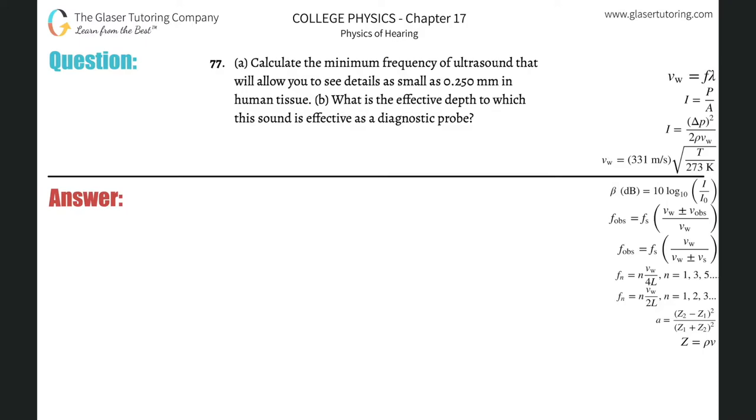Number 77 letter a: calculate the minimum frequency of ultrasound that will allow you to see details as small as 0.25 millimeters in human tissue. Basically, the precision in which we can identify human tissue, the distance, is equivalent to the wavelength of the ultrasound wave. So the wavelength here is going to be 0.250 millimeters.